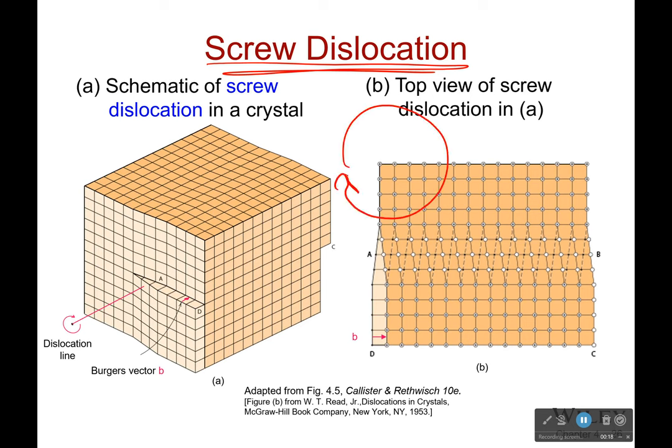In a perfect crystal, when we go some pattern like four up, four over, four down, four to the left, we should end up where we began. But sometimes that doesn't happen — maybe we end up right here instead.